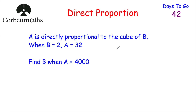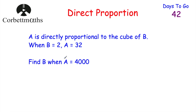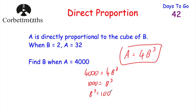Now using the same formula A equals 4B cubed, we've been asked to find B whenever A is equal to 4000. Replacing A with 4000: 4000 is equal to 4B cubed. Dividing both sides by 4 gives 1000 equals B cubed. Turning that around: B cubed equals 1000. To find B, we work out the cube root of 1000, which is 10, because 10 times 10 times 10 equals 1000. So B is equal to 10. Well done if you got that.